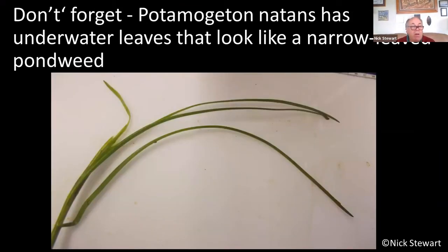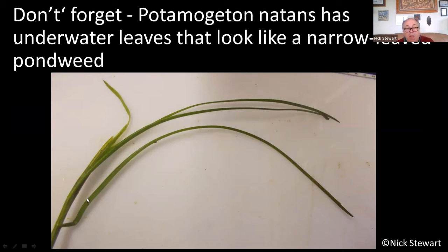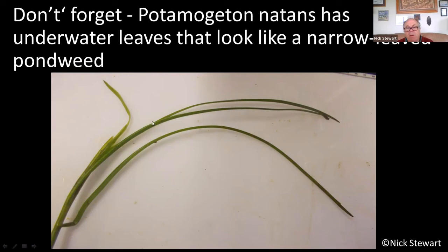Don't forget that Potamogeton natans, which you may well be familiar with, produces very obvious opaque floating leaves on the surface but has narrow underwater leaves which you could confuse with a narrowleaf pondweed. Essentially they're very solid — they look a bit like a leaf stalk but without a blade on the tip. Because we're so familiar with the broadleaf pondweed having floating leaves, when you see it without the floating leaves it can really throw you. Just something to bear in mind.